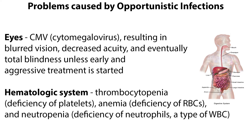The eyes are vulnerable to CMV, or cytomegalovirus, resulting in blurred vision, decreased acuity, and eventually total blindness unless early and aggressive treatment is started. Effects on the hematologic system are seen as thrombocytopenia (deficiency of platelets), anemia (deficiency of red blood cells), and neutropenia (deficiency of neutrophils, a type of white blood cell).